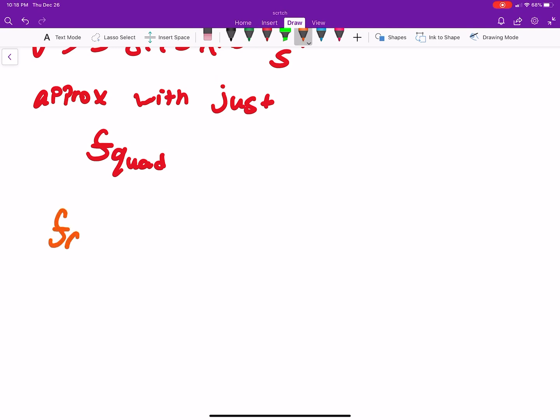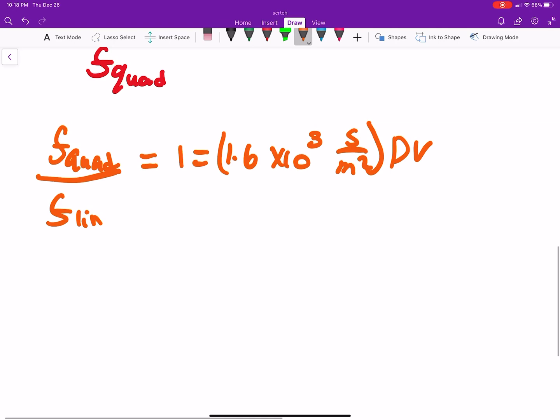Okay, so once again we would say f quad over f linear needs to be equal to 1. And this is equal to 1.6 times 10 to the third seconds over meters squared times DV. Or 1 over 1.6 times 10 to the third seconds over meters squared times 0.7 meters is equal to V.